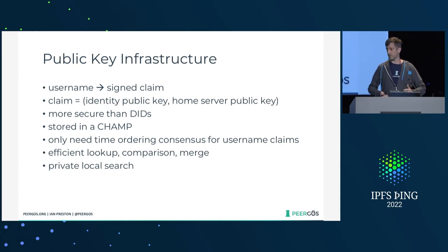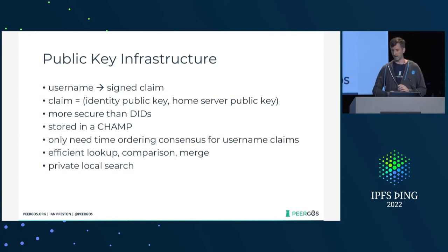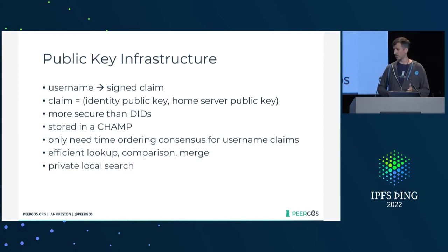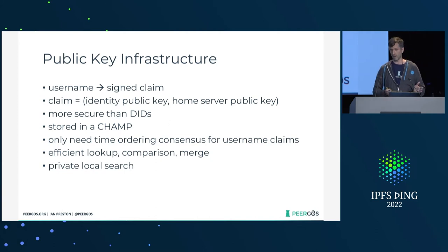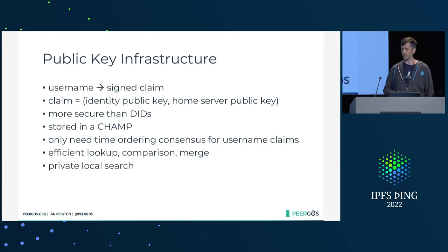All of this is stored in a CHAMP — a compressed hash array mapped prefix trie — which is a super cool data structure. It plays well with CIDs, it's insertion-order independent, and a bunch of other stuff. For the PKI, the only consensus we actually need is just time ordering, so two people can't claim the same username. But you get efficient lookup, comparison, and merge.